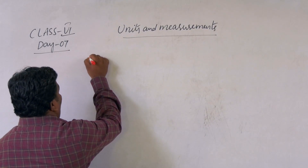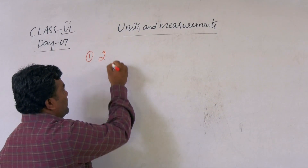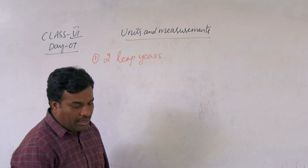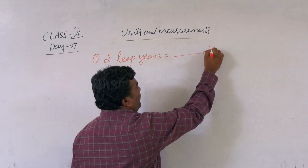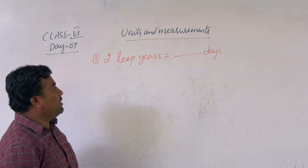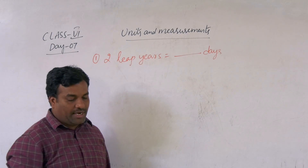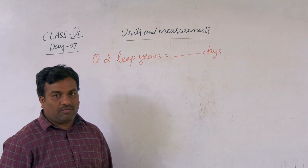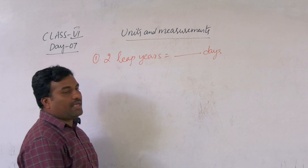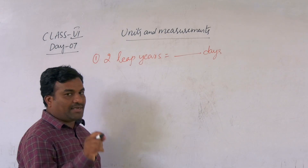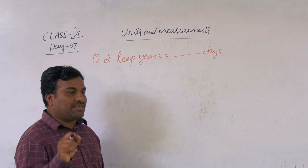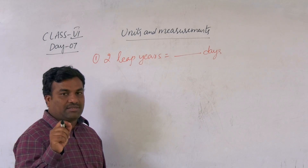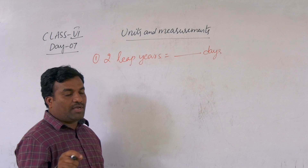The question is: two leap years equal to how many days? First, let us discuss what is a leap year. A leap year means every year that is exactly divisible by four is called a leap year.